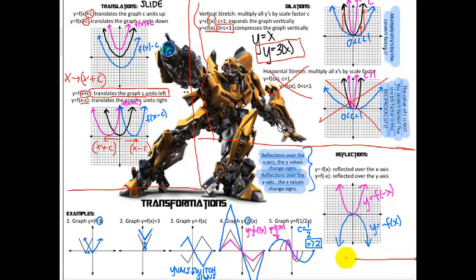Reflections reflect the graph over an axis. If you change the sign of the x-value, you reflect over the y-axis. If you change the sign of the overall function — the y-value — you reflect over the x-axis. This makes sense because when a point reflects over the x-axis, it's the y-coordinate that changes sign, going from positive to negative. Likewise, reflecting side to side over the y-axis changes the x-coordinate's sign.